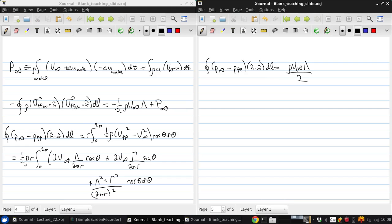Now we can see that this term will cancel with this term. And so since the drag per unit span then is negative one half rho V infinity lambda plus P infinity plus rho V infinity lambda over 2, we get the result that we were looking for, which is that the drag per unit span is exactly equal to the far downstream momentum defect.